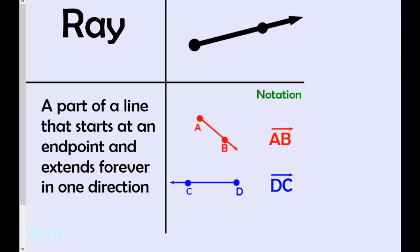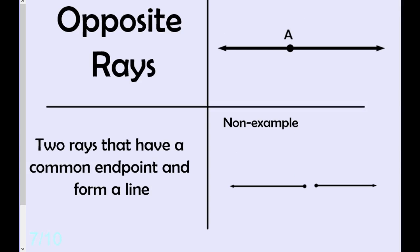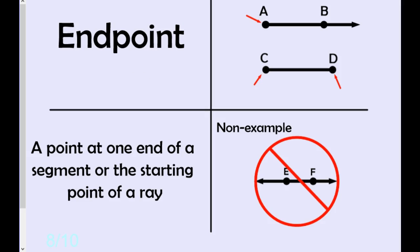The ray is like a hybrid. It has one endpoint. It goes forever in one direction. The opposite rays are literally rays going in opposite directions. They share an endpoint. Endpoints are points at the end, of course. We already talked about that.